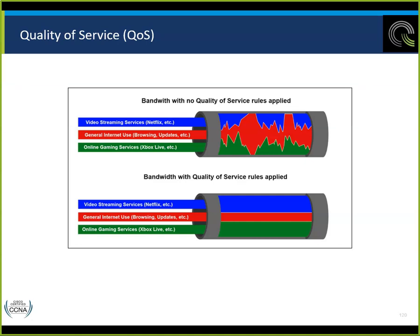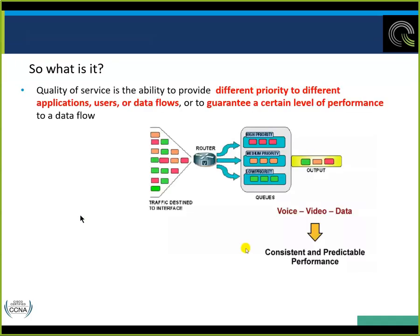So what is QoS? It is the ability to provide different priority to different applications, users, and data flows, and to guarantee a certain level of performance. Which ones get high priority? Phone calls are going to be the highest priority because of emergency phone calls — to be able to call the fire or police department to protect life and limb. Next is video, because we like our videos to be complete when watching a football or basketball game.